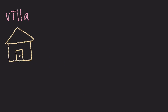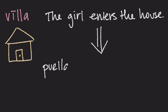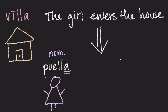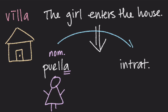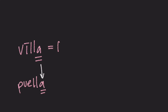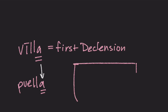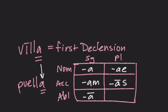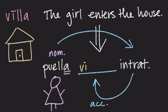Let's take a look at the word Villa. Let's say we want to write the sentence: the girl enters the house. Puella is our nominative singular — the girl. Our verb is going to be Intrat, meaning enters. The girl is in the nominative case, so we know she's doing the action. But we need Villa to be in the accusative case. Since Villa has the same ending as Puella, it's probably a first declension noun. So if we want Villa to be accusative, we look at the accusative singular ending for the first declension — that's A-M. So Villa needs to become Villam in order to fit in this sentence: the girl enters the house.